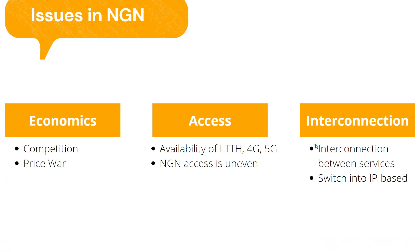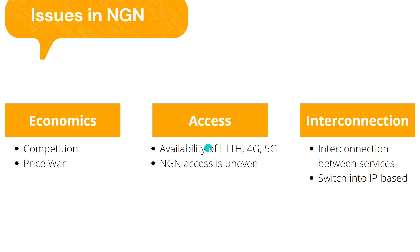Now let's move on to issues that may affect NGN. There are three: economics, accessibility, and interconnection. For the economics part, there are competition and the price war. Competition needs to be regulated by the government to make sure that it is effective and does not break any rules or create loopholes, which in turn will stimulate sustainable growth for the companies. For the price war, it basically means that each company keeps pricing their products lower than their competition, and this will cut the profit margin and may reduce the overall quality of the product.